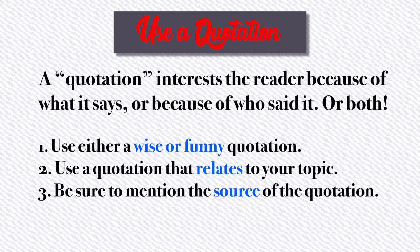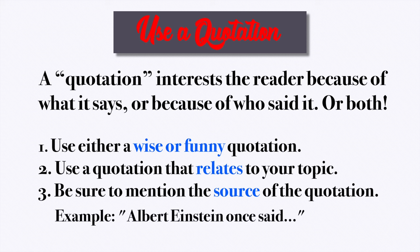The third one is: use a quotation — for example, an eye for an eye, Shakespeare in Romeo and Juliet. A quotation interests the reader because of what it says, or because of who said it, or both. Use either a wise or funny quotation. Use a quotation that relates to your topic. Be sure to mention the source of the quotation — for example, Albert Einstein once said...